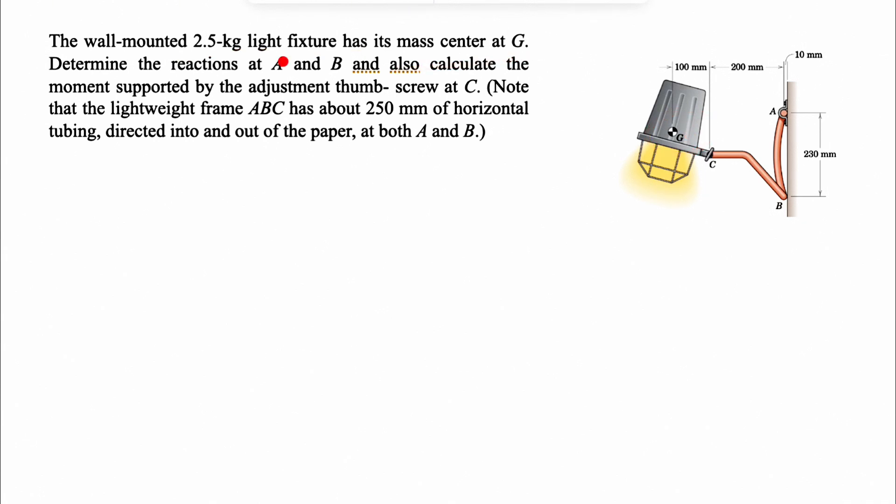We can see the center of mass in the figure, and we need to determine the reactions at A and B. Also, we need to calculate the moment supported by the adjustment thumb screw at point C. We have a note that the lightweight frame ABC has about 250 millimeter of horizontal tubing directed into and out of the paper at both A and B.